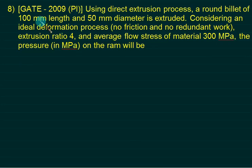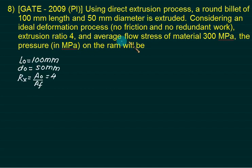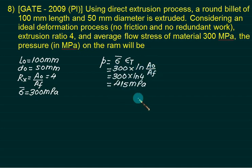A round billet of 100 mm length L0. Initial diameter is 50 mm. Is extruded. Extrusion ratio is 4. Average flow stress is 300. We want to find out ram pressure. Ram pressure is simply given by average stress multiplied by true strain. Average stress is 300. True stress is ln of A0 by A final. Answer is 415 Mega Pascal.